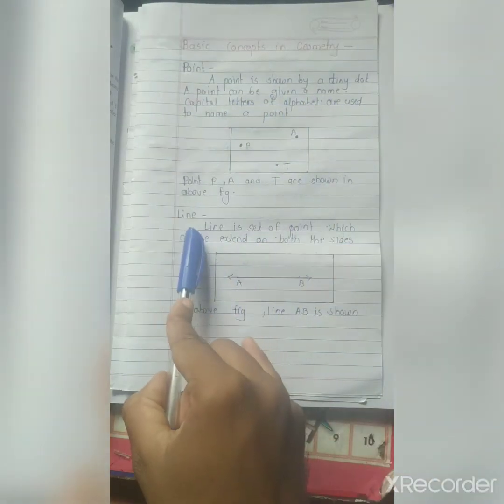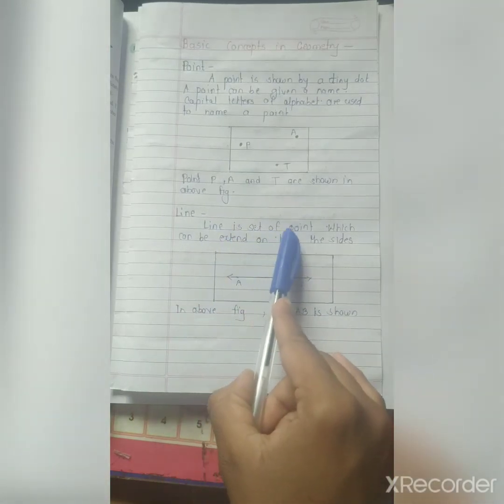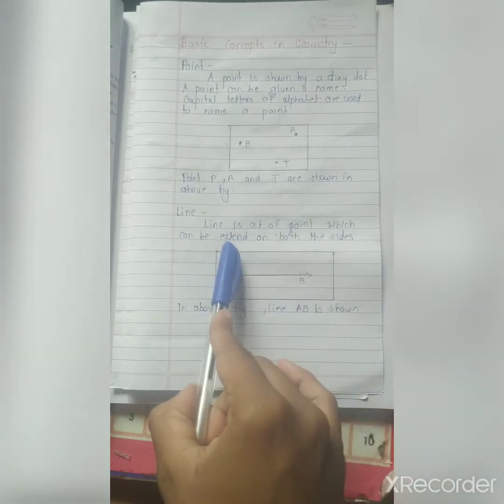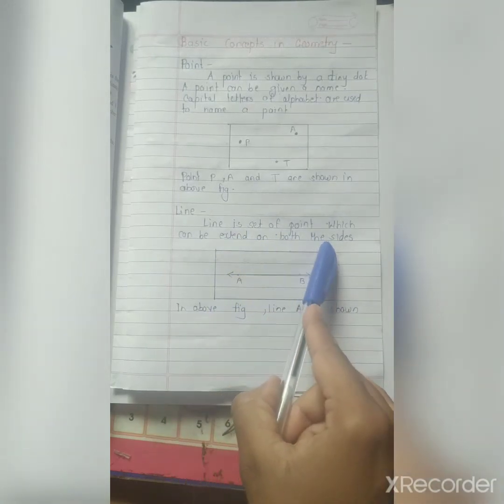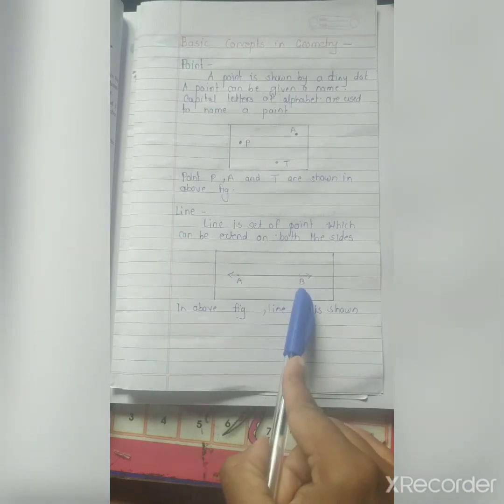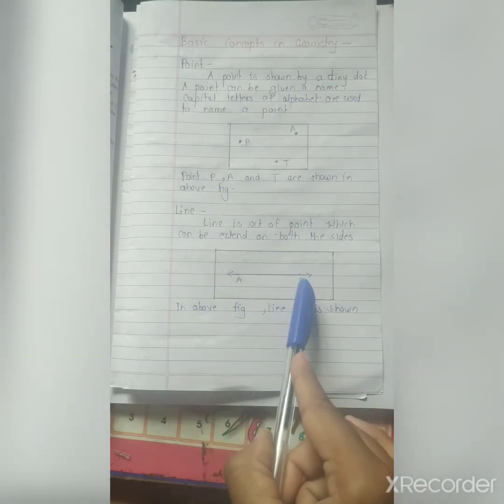Second point is line. What is meant by line? Line is nothing but the set of points which can be extended on both the sides. That word is very important - it can be extended on both the sides. In this figure, line AB is shown. This arrow shows that that line can be extended on both the sides.